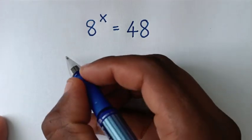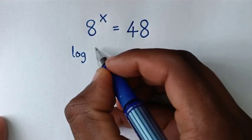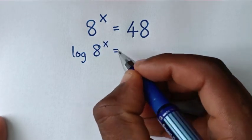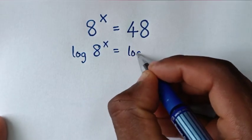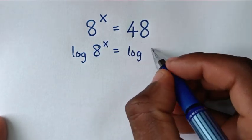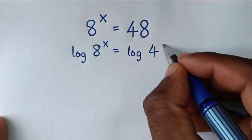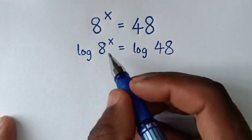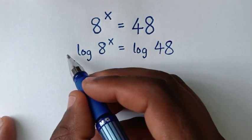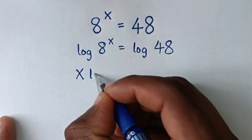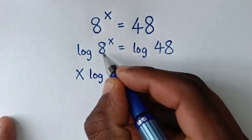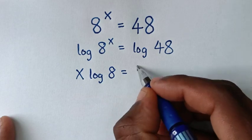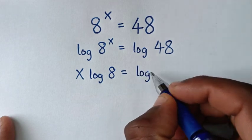So it will be log of 8 power x is equal to log of 48. Then this power of x will move to the base, so it will be x times log of 8 is equal to log of 48.